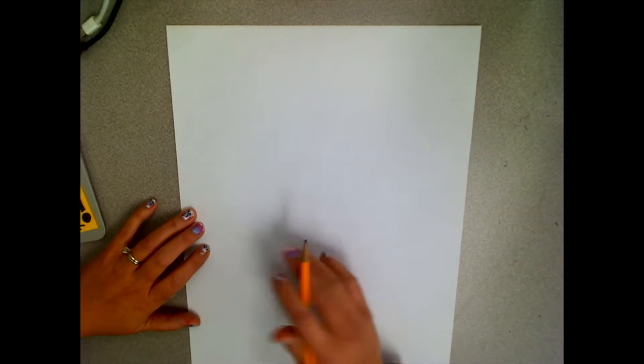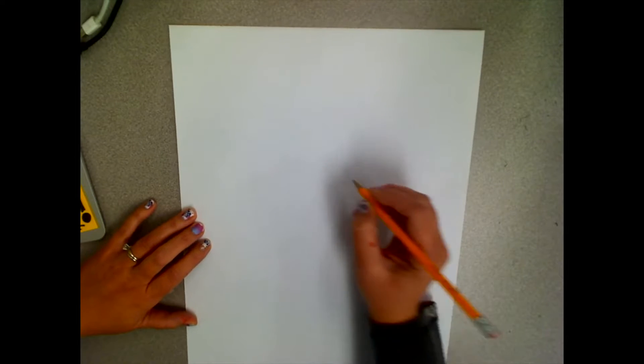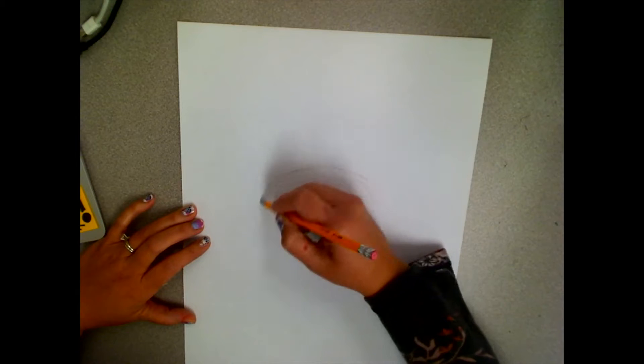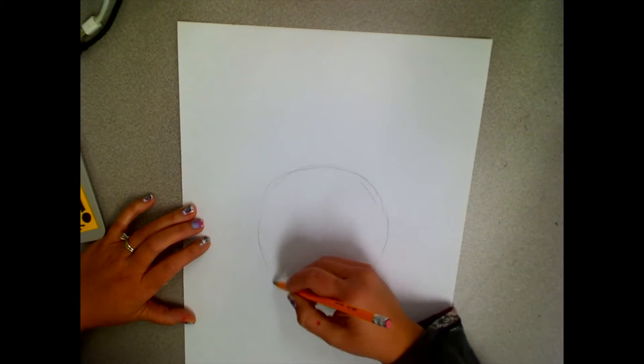We're going to sketch out the shape of our head first, which looks like an upside-down egg shape. Your skull is big on the top and then your chin gets smaller at the bottom. Start out by sketching the shape of your head.